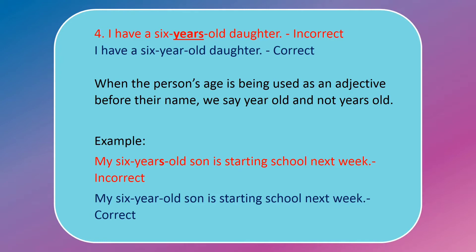I have a 6 years old daughter — this is incorrect. When a person's age is used as an adjective before a noun, we say 'year old' and not 'years old.' In this sentence, 'daughter' is a noun, and when we put something directly in front of the noun to describe it, we change it to singular. So the correct word is 'year': I have a 6 year old daughter. For example, my 6 year old son is starting school next week.